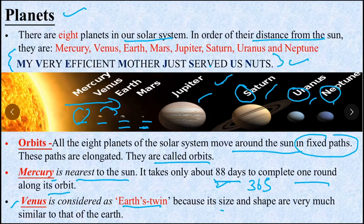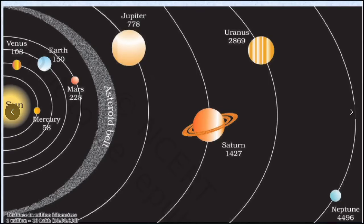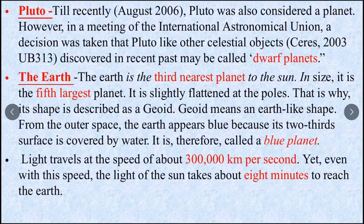Next important thing is Venus is considered Earth's twin because its size and shape are very much similar to that of the earth. Now we will go to asteroid belt which is between Mars and Jupiter.